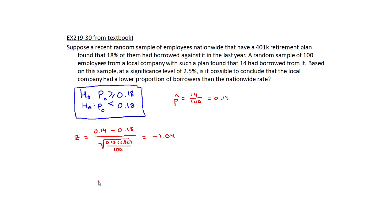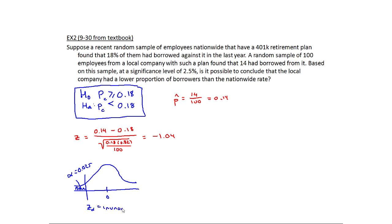Now I set up the rejection region. This is a z-distribution and it's a left-tail test, so alpha goes on the left-hand side. Alpha is 0.025, so I need z-alpha with area to the left of 0.025. Using inverse normal of 0.025, I get negative 1.96. Looking back at my test statistic of negative 1.04, we're not quite there — definitely not all the way at negative 1.96. So this is a fail to reject H₀.